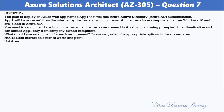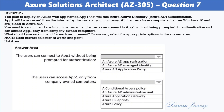Question number seven: You plan to deploy an Azure web app named App1 that will use Azure Active Directory authentication. App1 will be accessed from the internet by users at your company. All users have computers that run Windows 10 and are joined to Azure AD. You need to recommend a solution to ensure users can connect to App1 without being prompted for authentication, and can access App1 only from company-owned computers. The options for the first requirement are: an Azure AD App Registration, an Azure AD Managed Identity, or Azure AD Application Proxy.